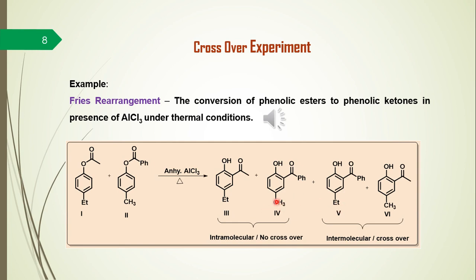Among these four products, the third and fourth are considered intramolecular (no crossover) products, where the migrating group migrates within the molecule in both cases. The fifth and sixth products are where the migrating group migrates from one molecule to another molecule — so the fifth and sixth products are considered crossover experiment products, confirming intermolecular rearrangement.